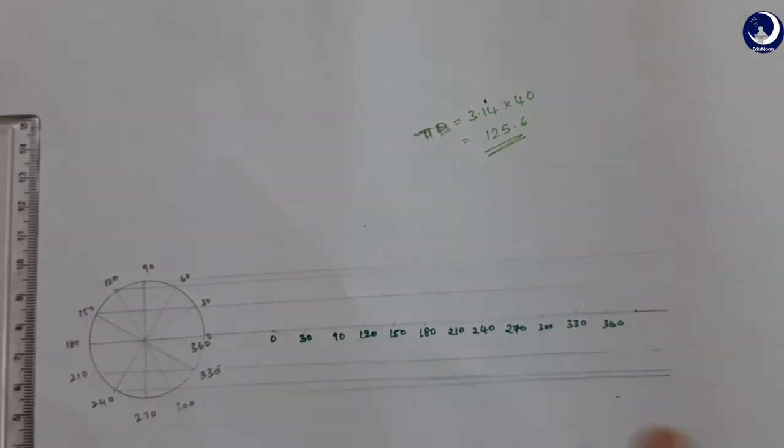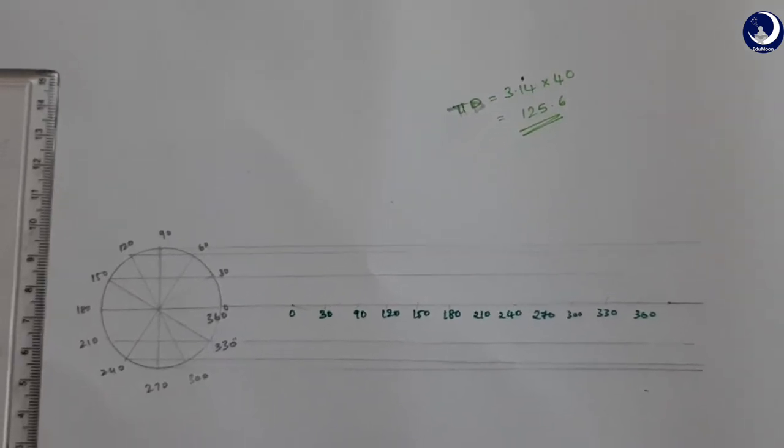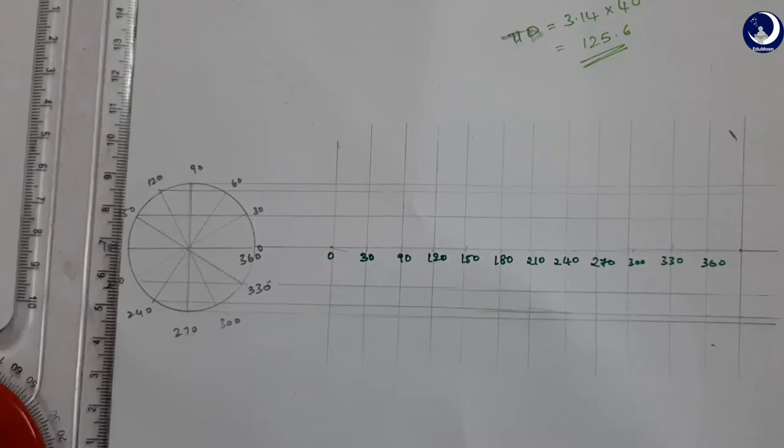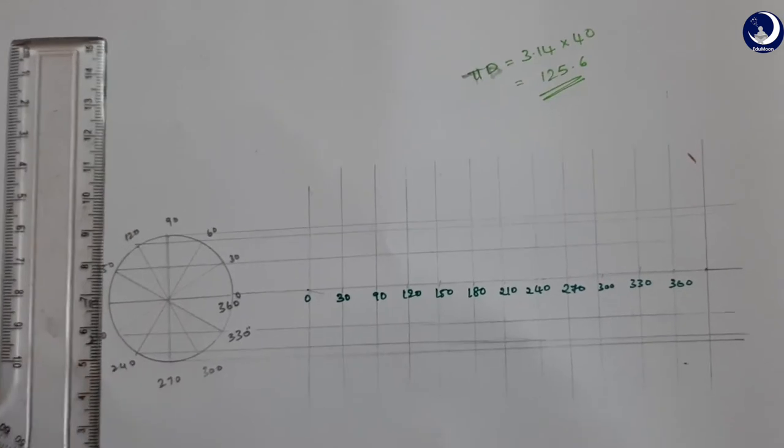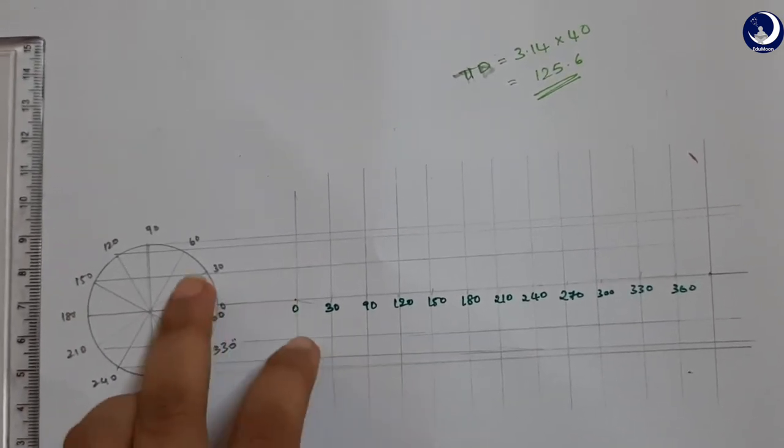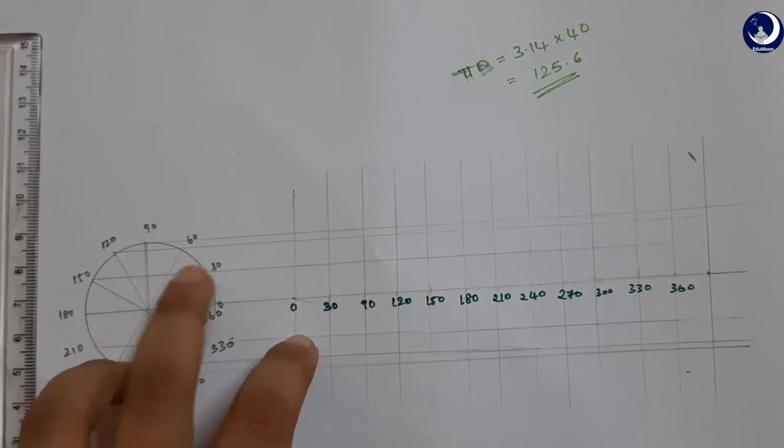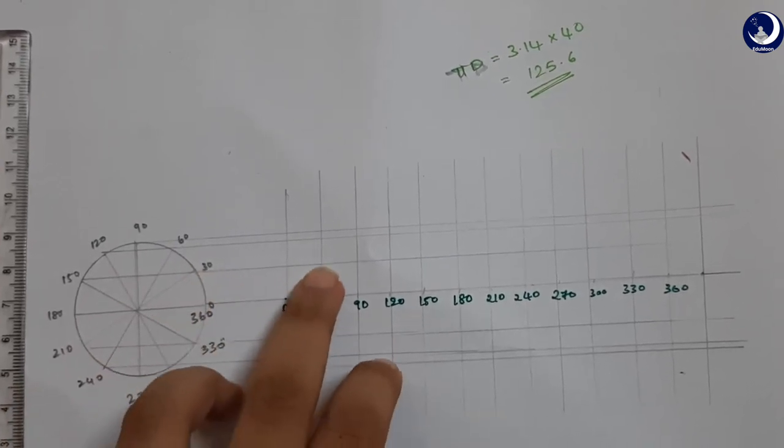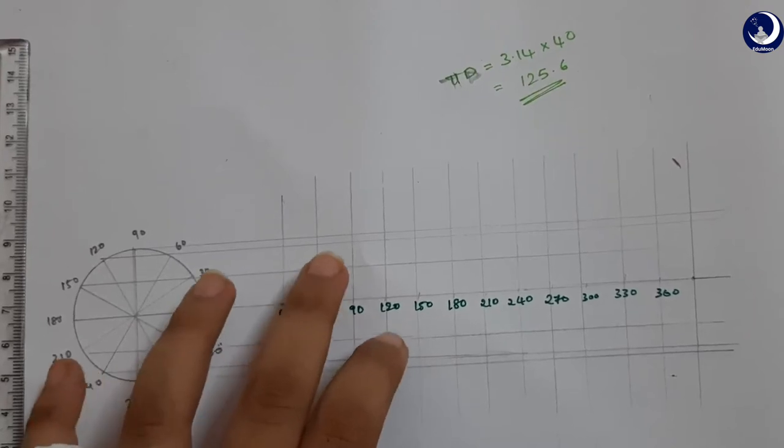Now we will draw perpendiculars through these points, like this. Now 0 is 0, this point. 30 is passing through, the line passing through 30 intersects 30 here. So this is going to be the point for 30.